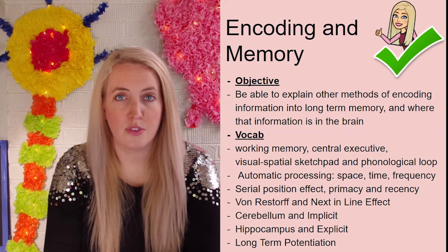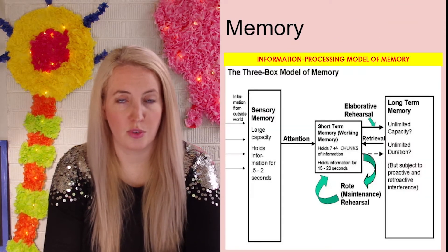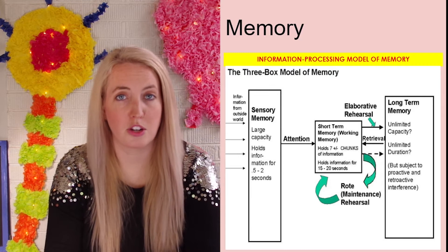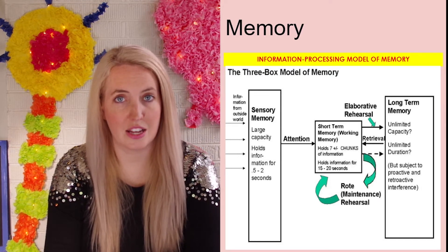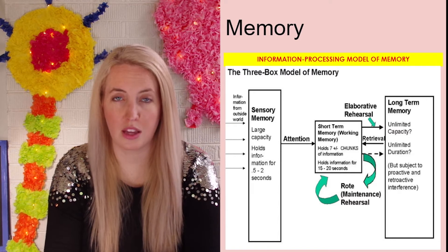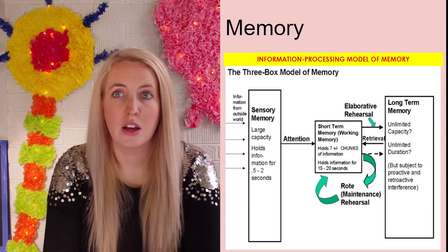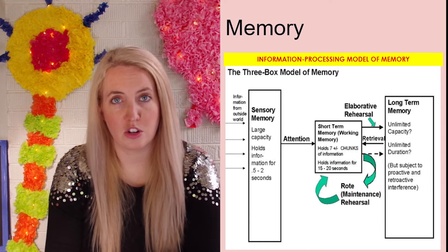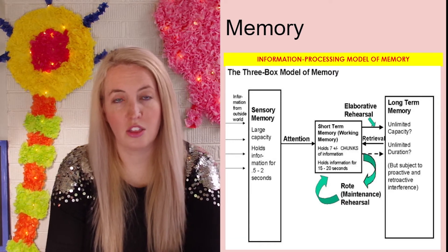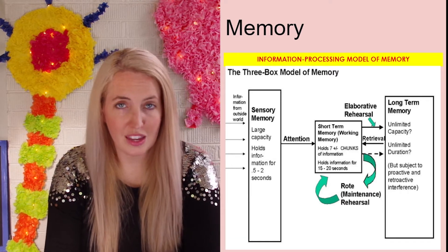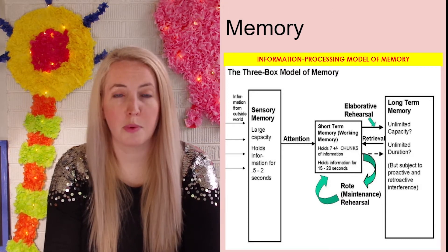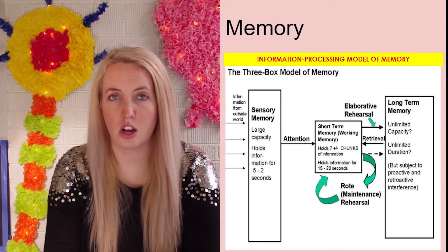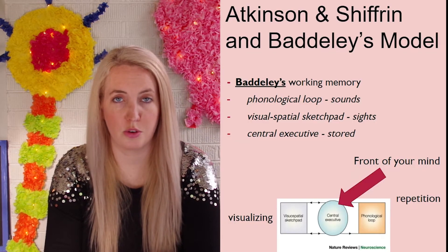Just to review, we left off last time looking at the Atkinson and Schiffrin three-box model, or information processing model of memory, covering sensory memory and short-term memory — the first two boxes. Today we're going to talk about how we move information into that third box, long-term memory, in ways that are both automatic and effortful. But first, let's talk a bit more about the middle box: short-term memory or working memory.